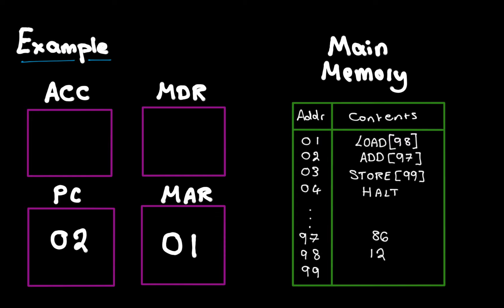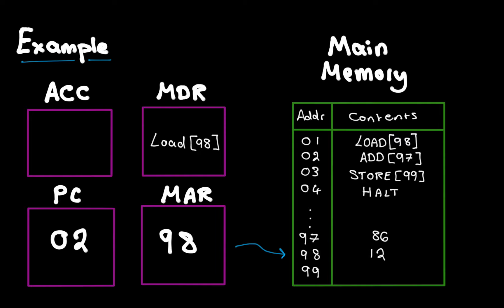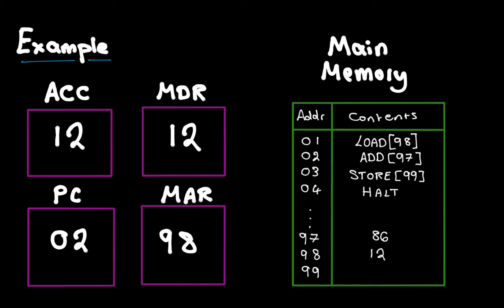The first thing we do is copy the contents of the program counter to the memory address register. Then we increment the program counter to the next address, and go to main memory via the address bus to address number one, and load that into the memory data register. Address one contains the instruction 'load 98', which means load address 98. So we put address 98 into the MAR and fetch whatever's there — which is the number 12 — and load that into the memory data register. Since the instruction was to load, that means take the value to the accumulator, so we pop 12 into the accumulator.